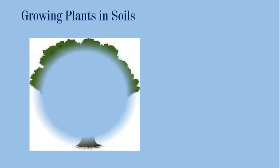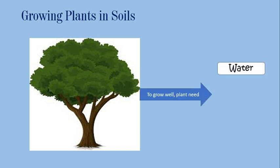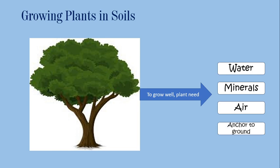We already know that soil is used for plants to grow. Plants need soil so they can grow well. To grow well, plants need water, minerals, air, and also an anchor to the ground — meaning their roots must attach to the soil.